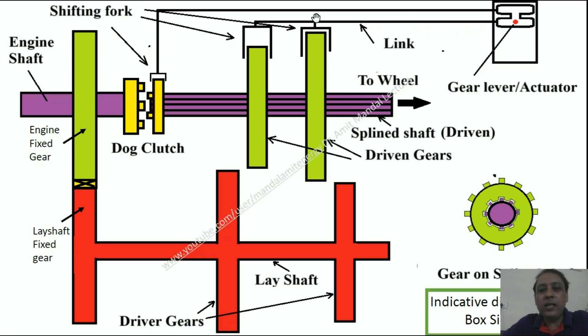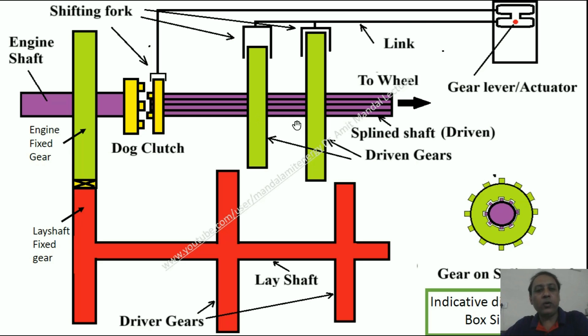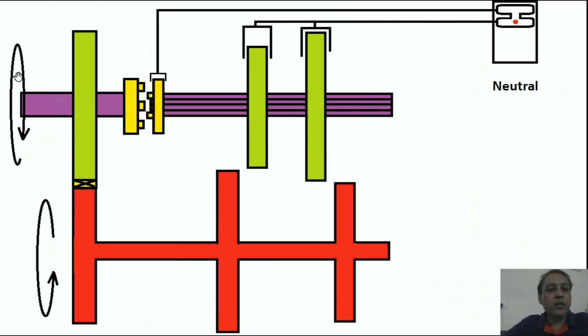These are the links and forks by the help of which we can slide these gears. And you can see there is also a dog clutch, which you will understand later.